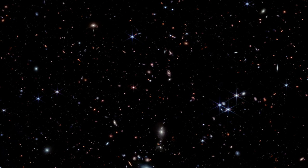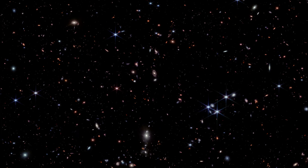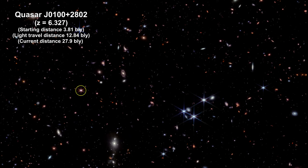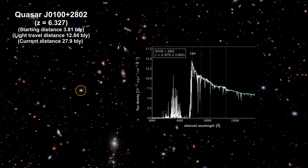Here's an image taken by Webb in 2023. There are more than 20,000 galaxies in this field. The hyperluminous quasar J0100+2802 is at the center. It is one of the most luminous quasars known. Its supermassive black hole is 10 billion times more massive than our Sun. Its redshift is 6.327, giving us the distance the light traveled to reach us at 12.8 billion light-years.